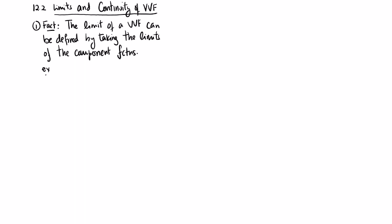So let's just look at two examples. Suppose, for example, we took the limit as t approaches 1, and we have a vector-valued function like t squared i plus 2tj plus 1 over tk.